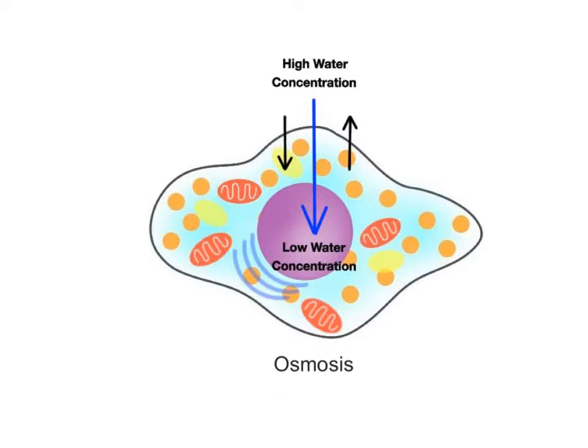Osmosis is a specific type of passive transport in which water moves through a selectively permeable membrane such as a cell's plasma membrane. Water moves in an overall downhill direction along its concentration gradient from an area of higher water concentration on one side of the membrane to an area of lower water concentration on the other side. Because it's passive, no energy in the form of ATP is needed.